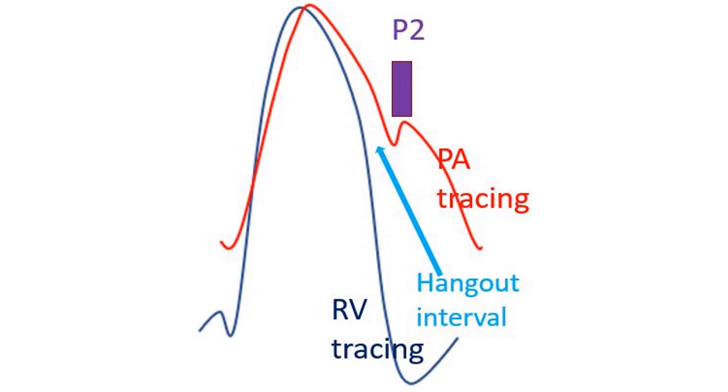This is because of the higher systemic vascular resistance. The pulmonary hangout interval will shorten when there is pulmonary hypertension.